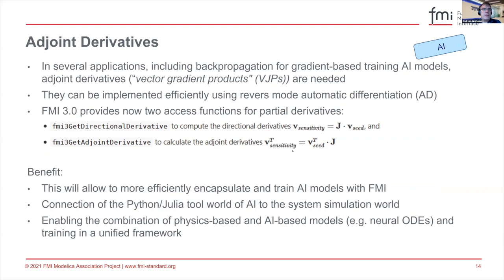Joint derivatives, as we heard in the previous talk, allow improved computation of derivatives, mostly for AI and machine learning applications. It's essentially a way to extract meaningful information from the FMU for special applications.